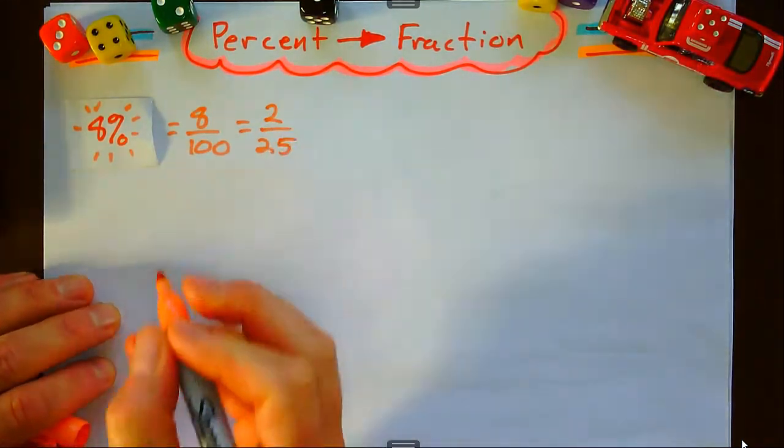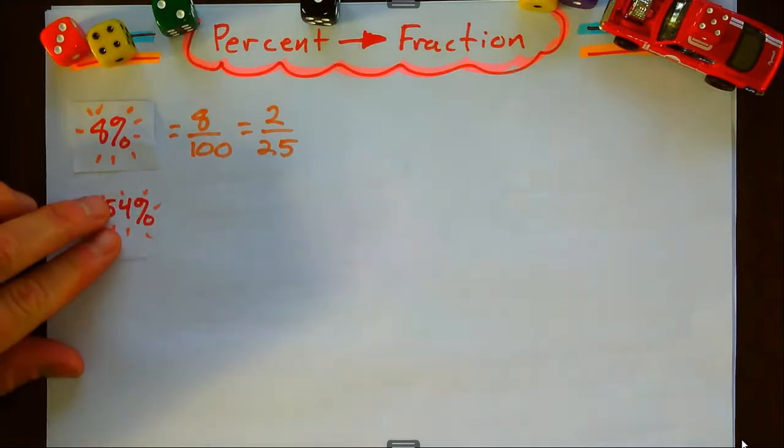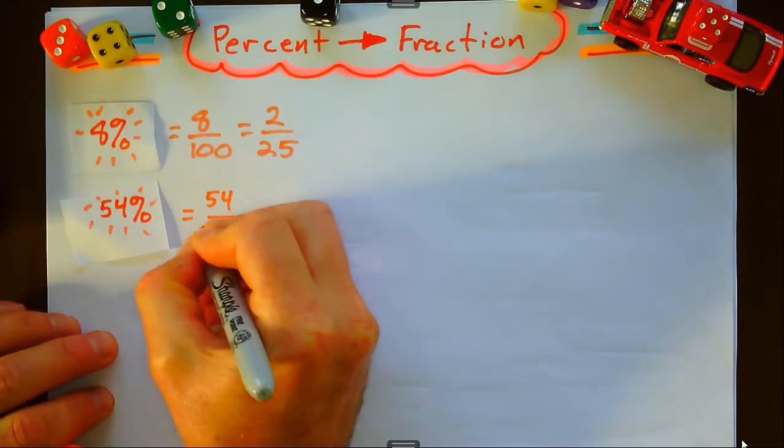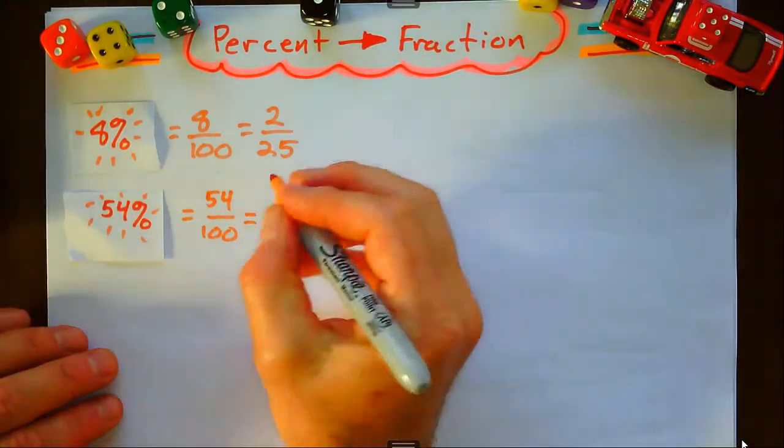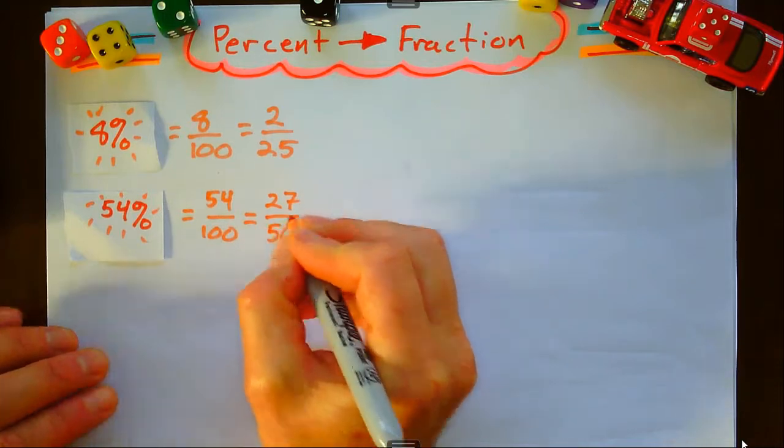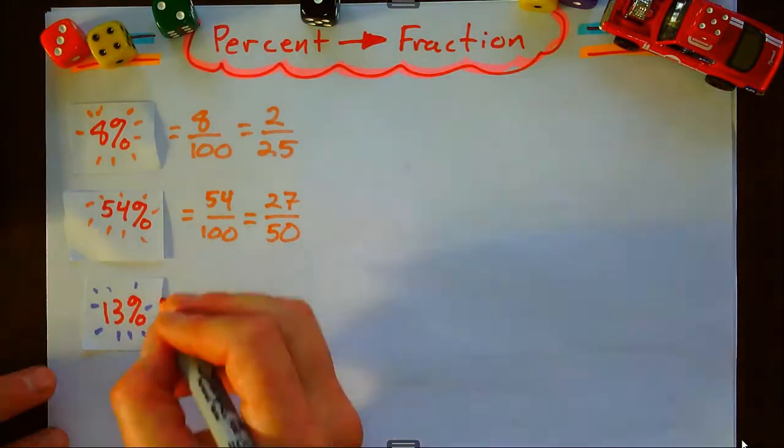Okay, hello there. Let's change percents to fractions. Here's my example: there was 8%, 54%. 54 over 100, divide by the highest common factor which is 2, and I get 27 over 50.